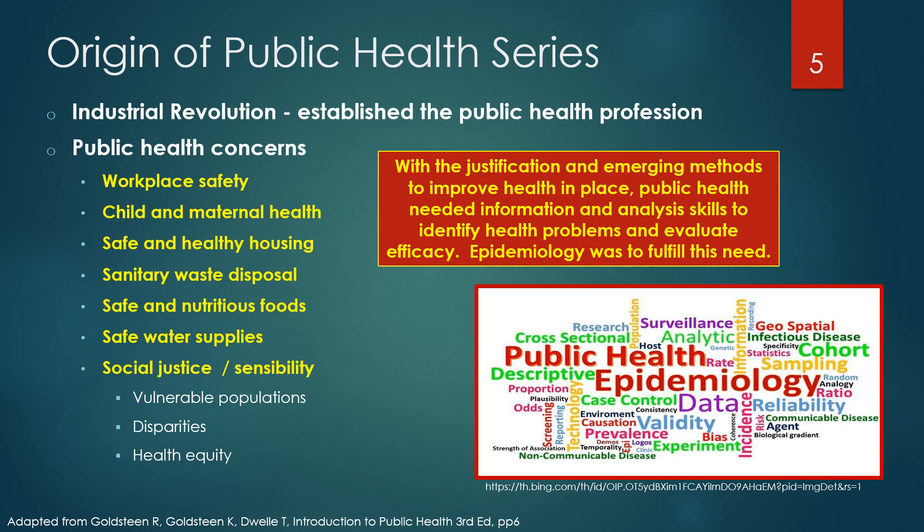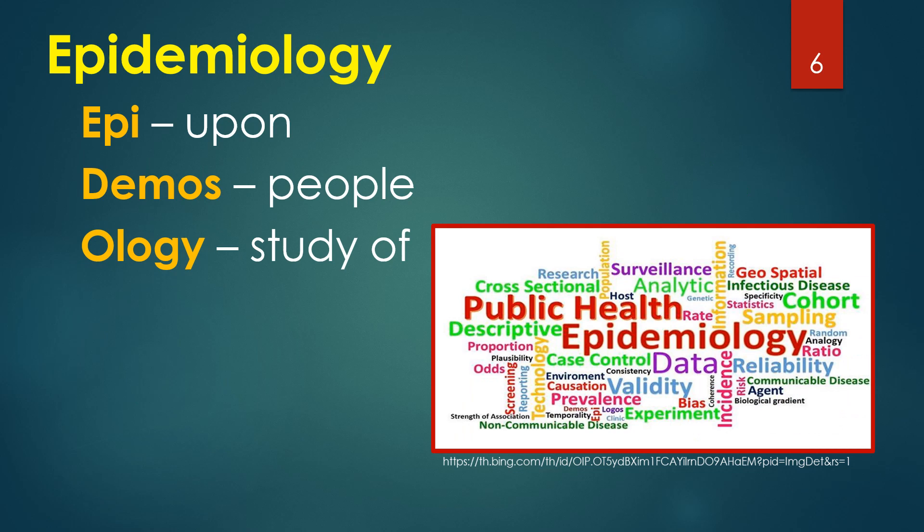These commitments and concerns are still at the heart of many, if not most, public health goals and activities today. It can also be argued that this public health sensibility arose among progressive elites in response to the inequities and hardships of the poor and working people during the Industrial Revolution. With the justification and emerging methods to improve health in place, public health needed information and analysis skills to identify health problems and evaluate efficacy. Epidemiology was to fulfill this need. The word epidemiology comes from Greek roots: epi means upon, demos means people, ology means study of. So epidemiology means the study of something that happens to people or populations.